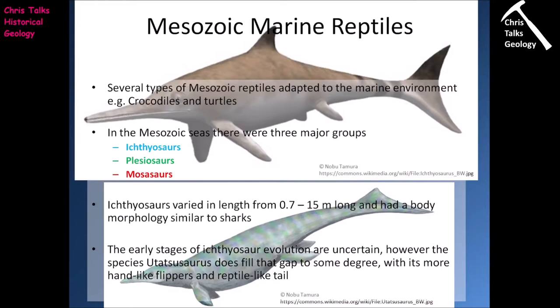Several types of reptiles in the Mesozoic adapted to the marine environment. We know there were saltwater crocodiles, turtles, and marine reptiles have made it through to the present day, such as sea snakes and marine iguanas. Reptiles moving into the marine environment isn't anything out of the ordinary.